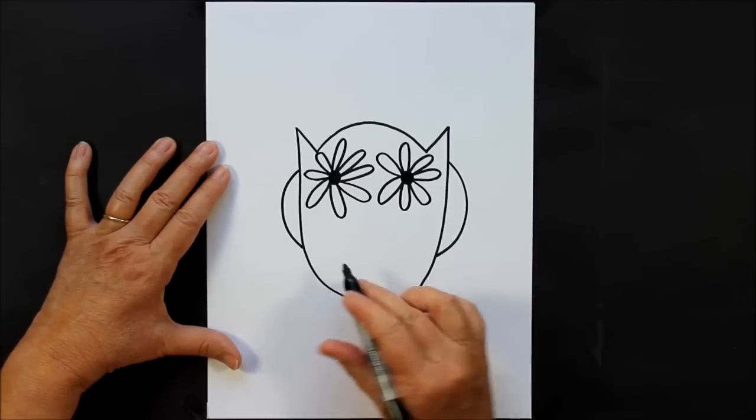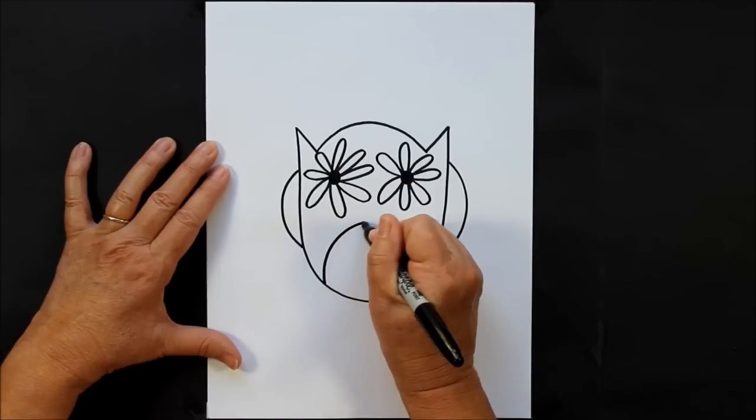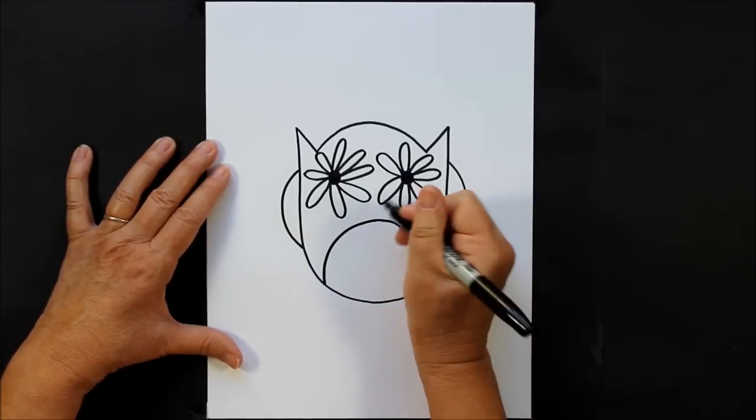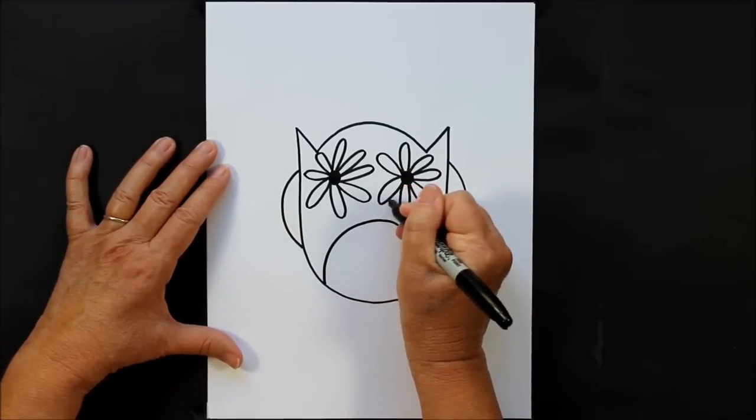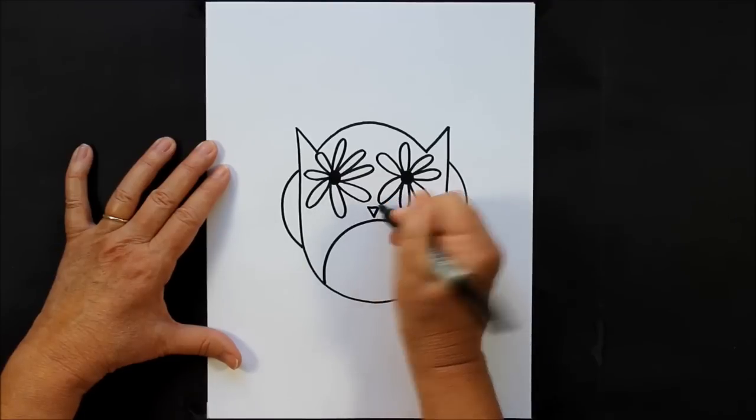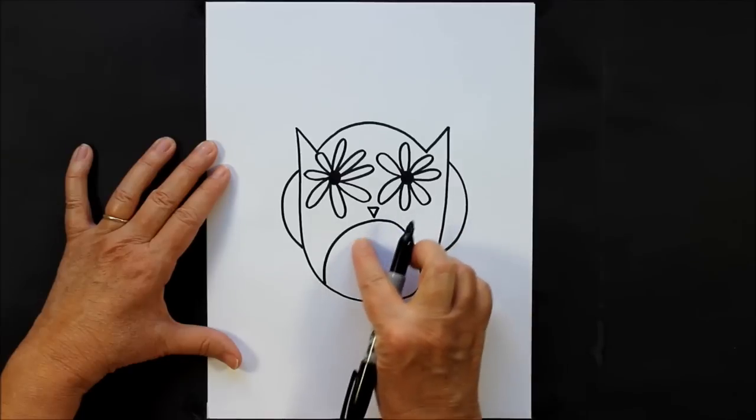Now we're going to go back down to the bottom part of your body and you're going to make an upside down U, just like this. And then right in this area between the flowers and the upside down U, we're going to make a little beak just like that.